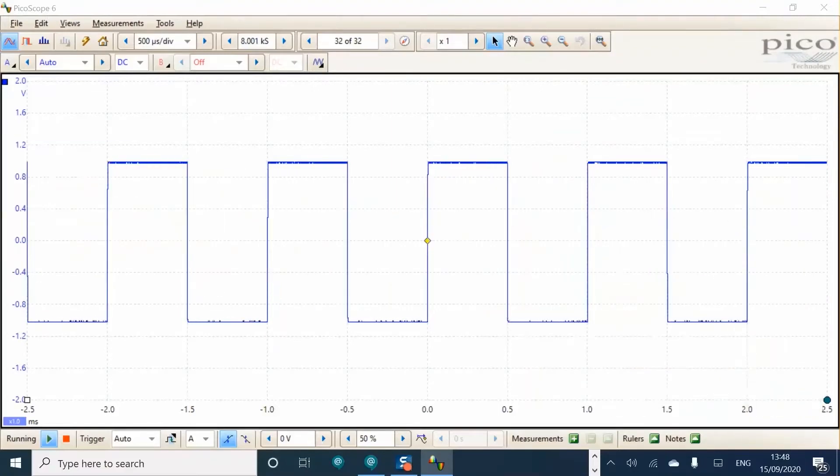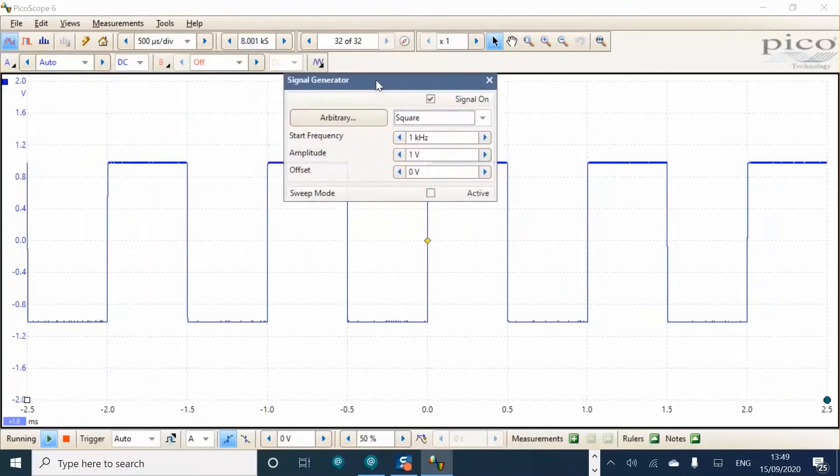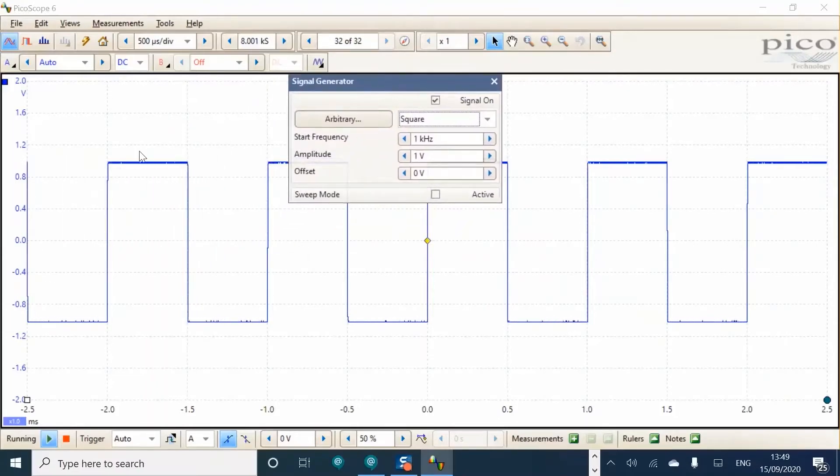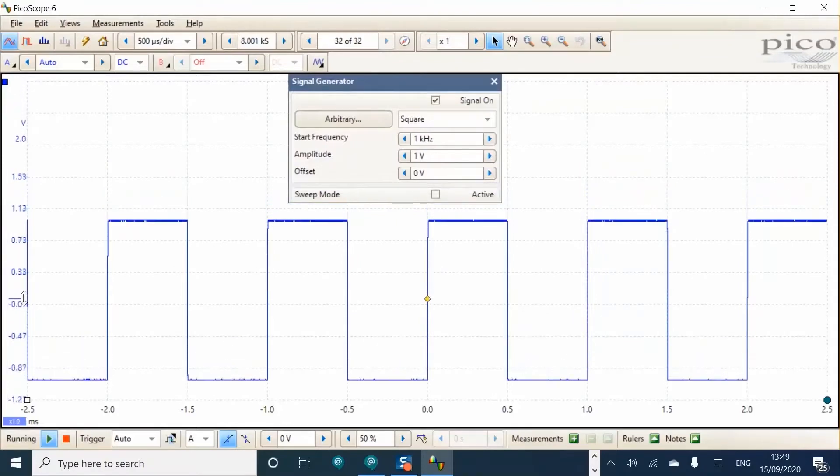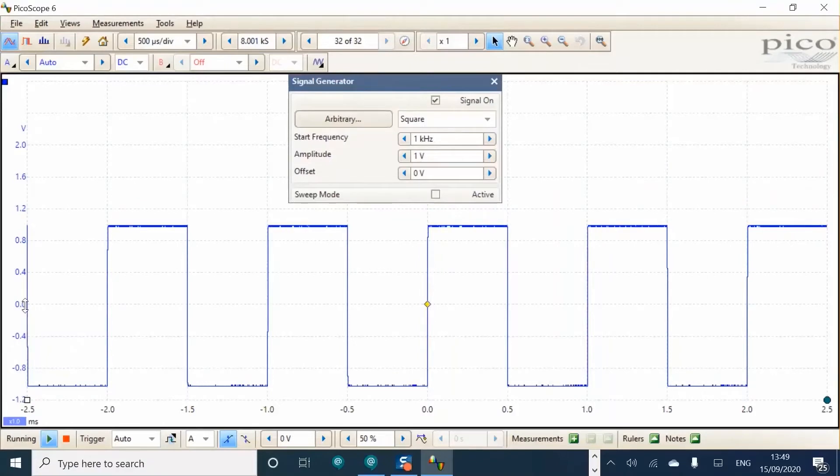Or even off the screen onto a second display to give you full visibility of the waveform. In this case, I'm going to leave it in the centre and actually move the waveform down two divisions by dragging the scale and allowing it to snap to the graticule.